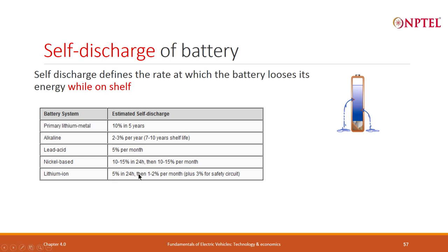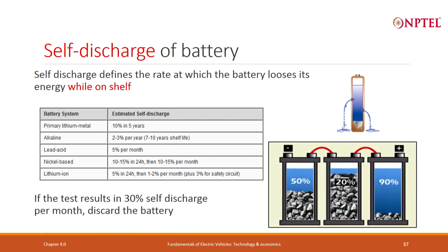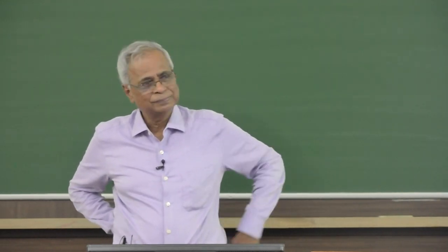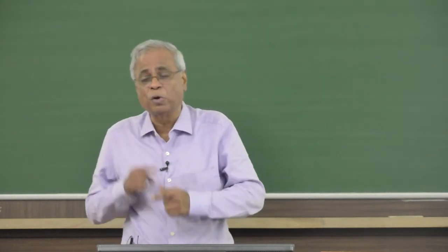On the other hand, nickel-based batteries are 10 to 15 percent in 24 hours and then 10 to 15 percent per month — much worse. Lead acid is 5 percent per month. Primary lithium-ion is 10 percent in 5 years — some very good batteries. Self-discharge is important and you do not want more than 1 or 2 percent per month. If test results show 30 percent self-discharge per month, discard the battery — if something is going wrong, it is self-discharging.